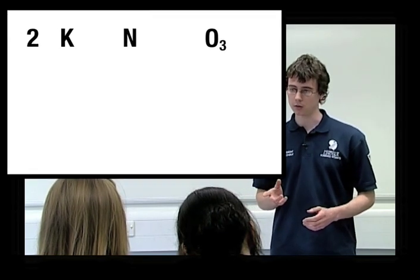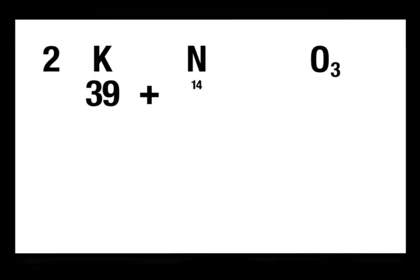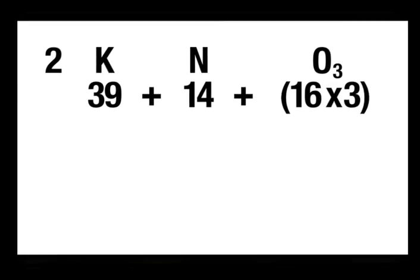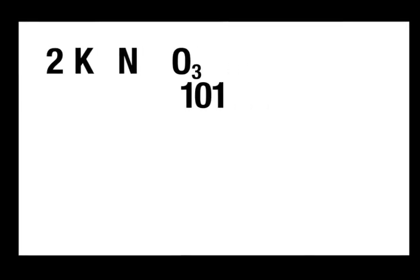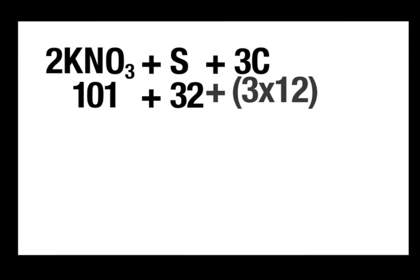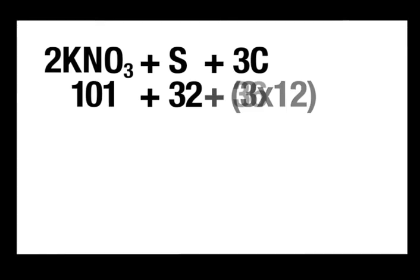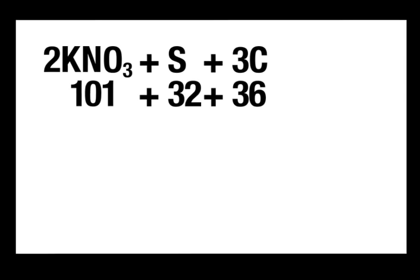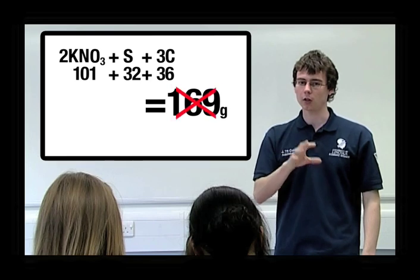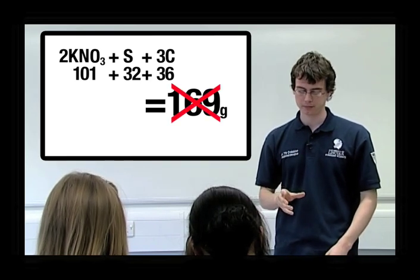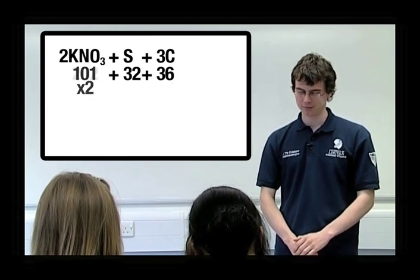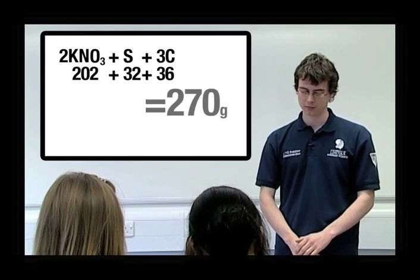Hannah, would you like to do this for me please? 39 plus 14 plus 16, but we multiply 16 by 3 because there are 3 oxygens, so that's 48 which equals 101. Then, sulfur is 32 plus carbon is 3 times 12 because there are 3 carbons, which is 36. So that makes 169 grams overall. Well, you're kind of right, but you're not. Think about the number of moles again. Oh yeah, there's 2 potassium nitrates, so it's 101 times 2, which is 202. So, the overall weight is 270 grams.